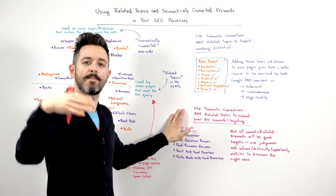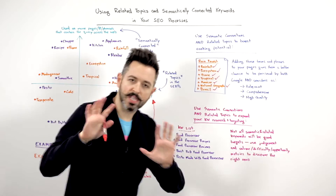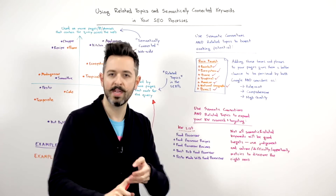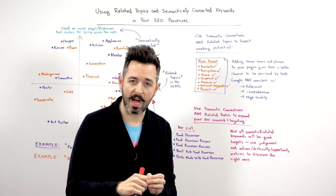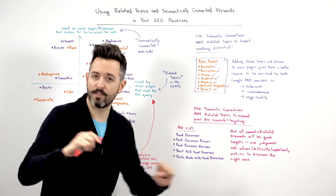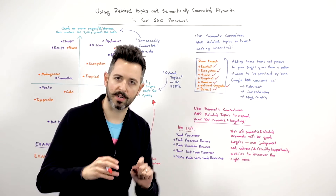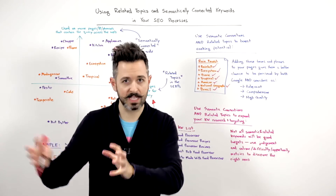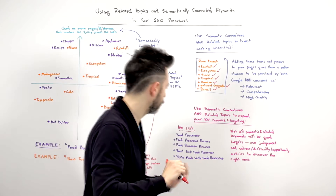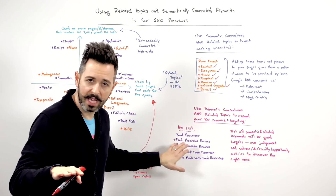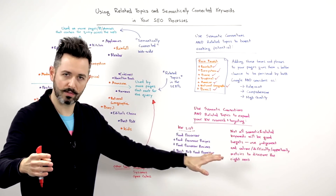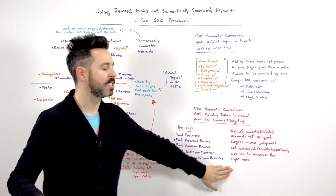The second thing is I can use this to expand my keyword research. Instead of just saying I'm going to look for things people also search for using Google Suggest, related searches, keywordtool.io, or Google AdWords for high-volume searches, I might broaden my thinking to — I wonder if things like 'food processor recipes' or very specific things like 'pesto made with food processor' are interesting things to target deeper in my site, so I can build authority around all the topics and concepts related to 'food processor.' Not every one of these semantic and related topics is going to be a good choice — you have to use good judgment and the traditional metrics for keyword research: volume, difficulty, opportunity to discover the right ones.